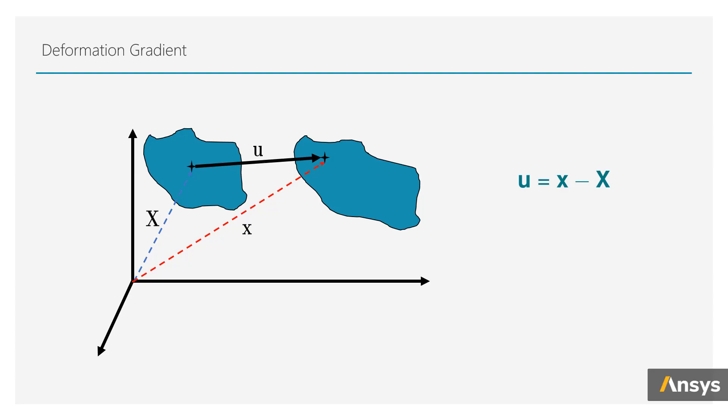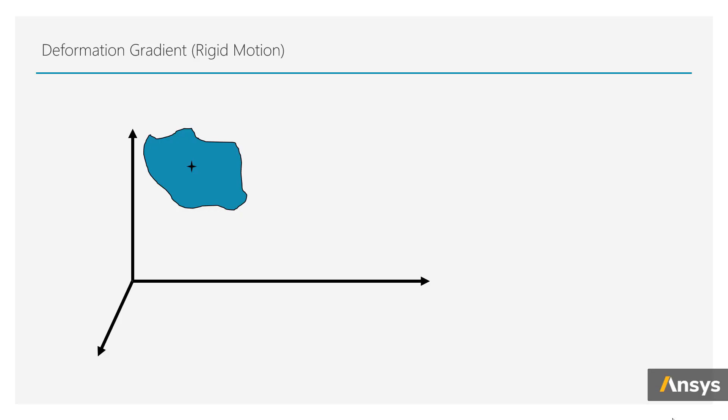So, we define a new term called the deformation gradient. The deformation gradient is the derivative of the vector in deformed configuration with respect to the undeformed configuration. This definition alone may not convey the physical significance of this term, so let's look at this simple example.